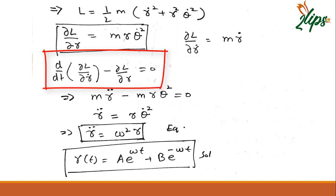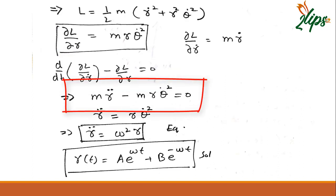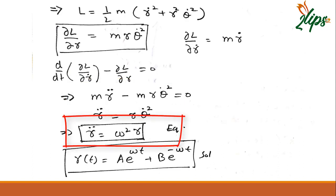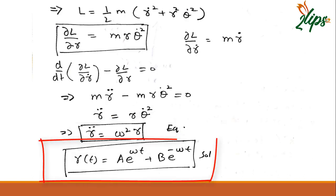This is the Euler-Lagrange equation. I can put it here: m R double dot minus m R theta dot squared. After very simple simplification, I can get R double dot equals omega squared into R. This is a standard differential equation in calculus, so the solution of this equation is given by this relation.